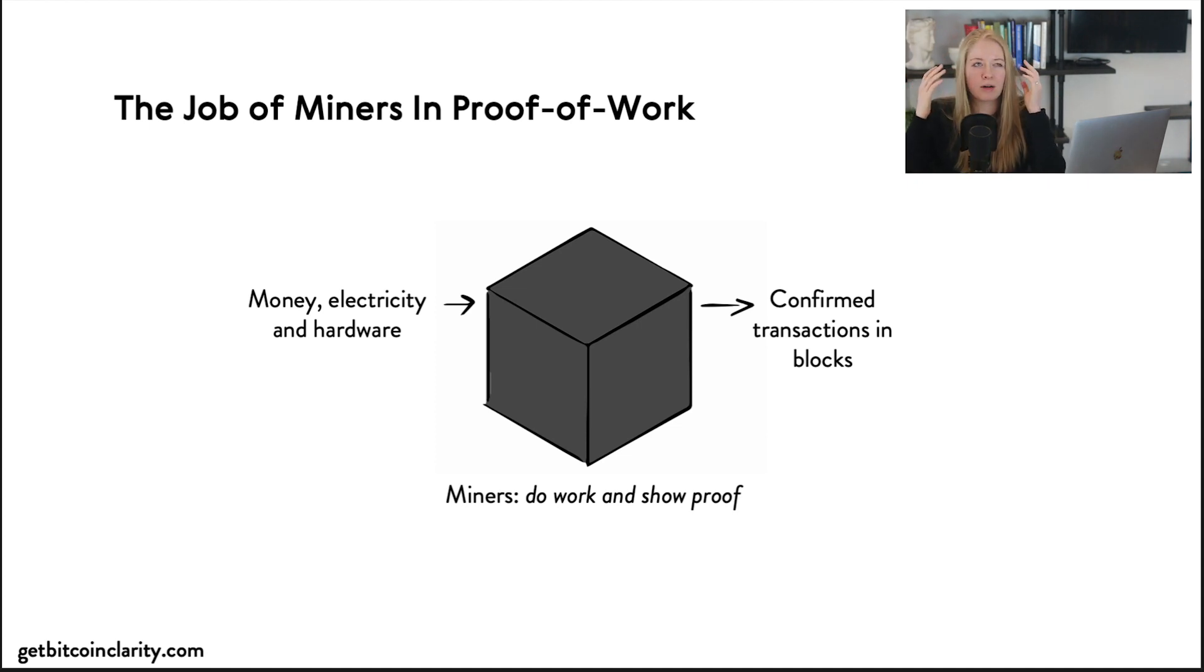The best way I know how to do this is to use this mental model called black box thinking, very common in engineering. When a system is too complicated, you just hide all the complexity in the box and you just look at the inputs and outputs. So the inputs to mining are electricity, hardware, and money. You have to buy the computers and you have to spend money on electricity. So you have these three resources going into mining.